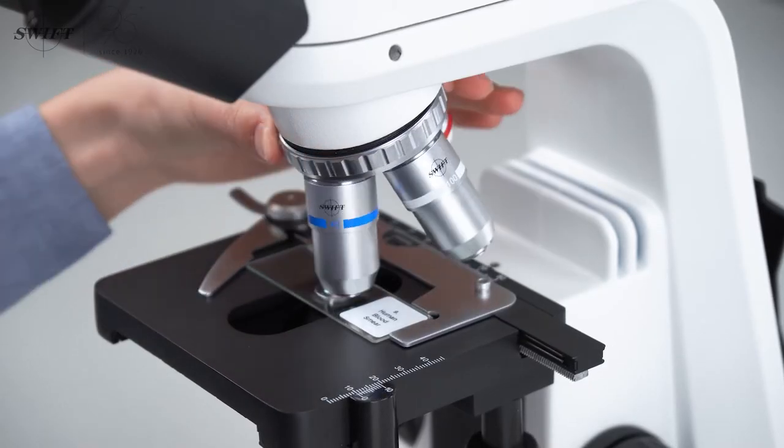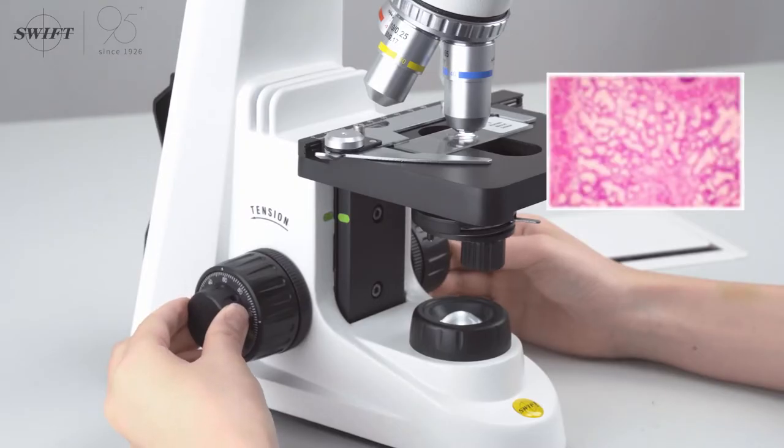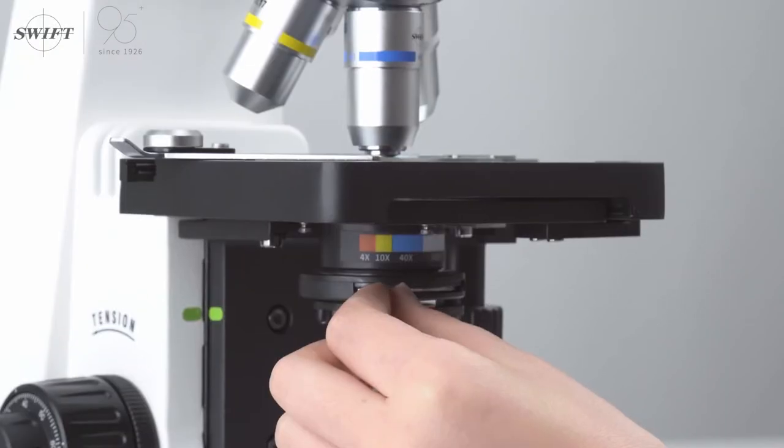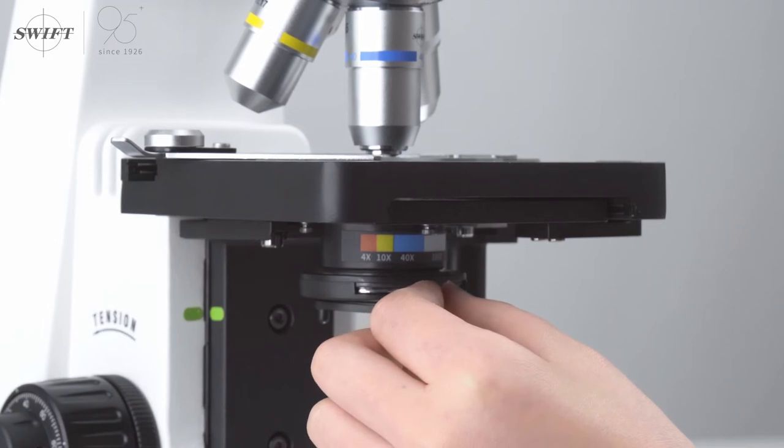When using the high magnification 40x objective lens to observe details, obtain a clear image under the microscope by fine-tuning. Then adjust the corresponding color-coded position of the aperture diaphragm to make the contrast and sharpness of the image more perfect.